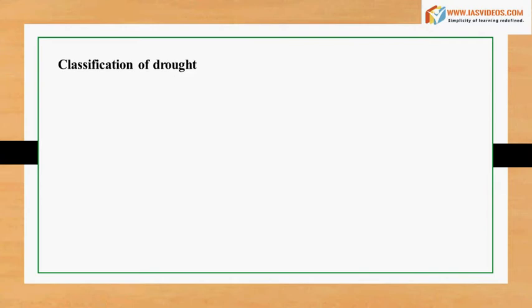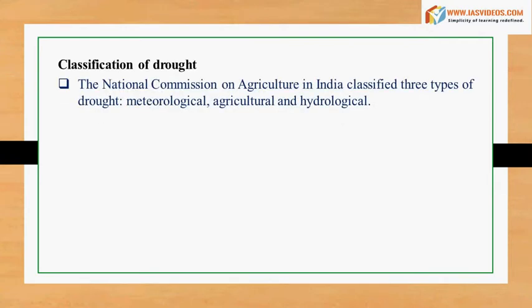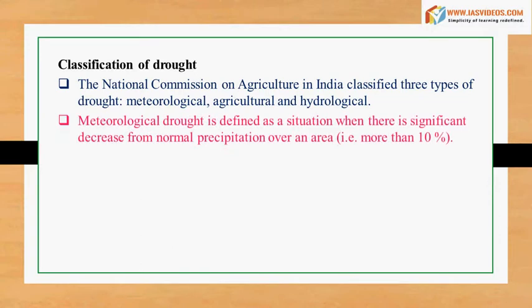Classification of Drought: The National Commission on Agriculture in India classified three types of drought — meteorological, agricultural, and hydrological. Meteorological drought is defined as a situation when there is a significant decrease from normal precipitation over an area, i.e., more than 10%.